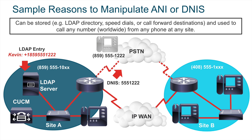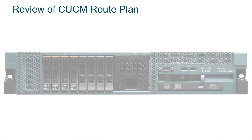Over at site B, it's a long-distance call, so I will be sending a different DNIS: 1-859-555-1222. The point is, if we start with a fully globalized E.164 number, then we can just chop off information that we don't need on a site-by-site basis. That makes it a lot easier than asking at each site: do I need to add an area code? Do I need to add a one? Do I need to add a plus? No — we can just start with the fully globalized E.164 number and on a site-by-site basis have that gateway chop off anything we don't need.